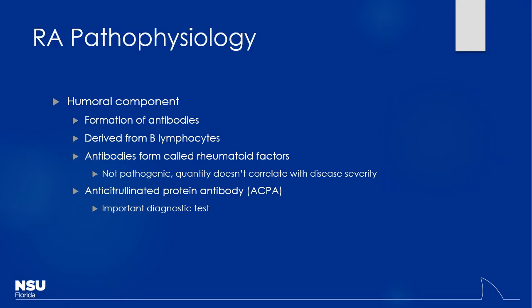How does methotrexate work? It inhibits the ability for cells to use folic acid, so they can't produce new DNA — those inflammatory cells cannot replicate. Again, you're going to be using these same concepts because the actual way these drugs work hasn't really changed. It's just a matter of what disease they're being used for — carry that information forward because we're going to see it again in just a few minutes.